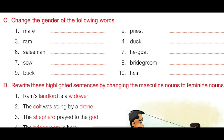Sixth, he-goat — answer is she-goat. Seventh, sow — answer is pig, P-I-G. Eighth, bridegroom — answer is bride, B-R-I-D-E. Ninth, buck — answer is doe, D-O-E. Tenth, heir — answer is heiress, H-E-I-R-E-S-S.